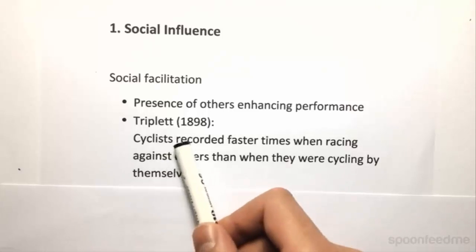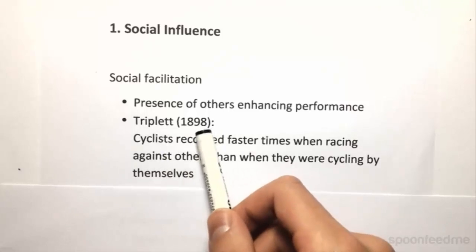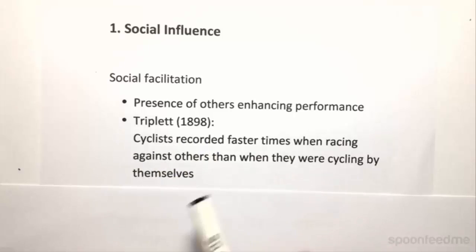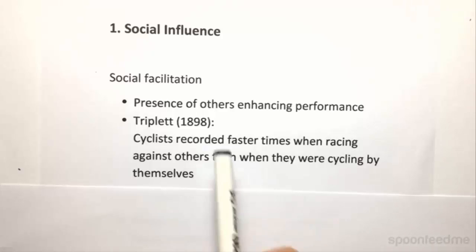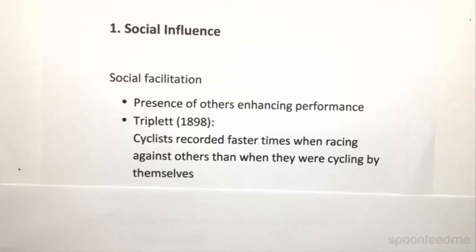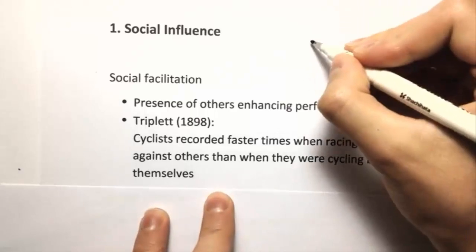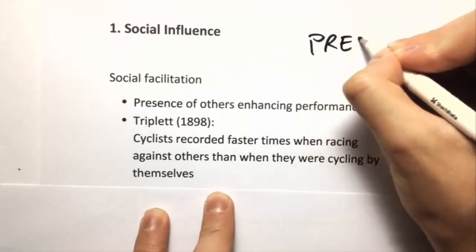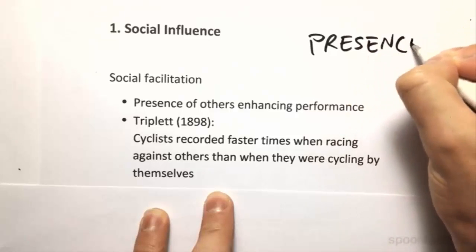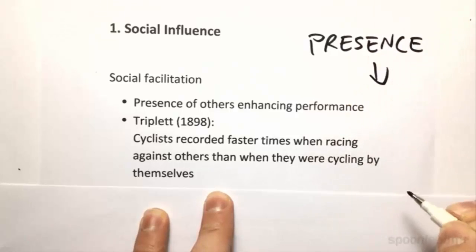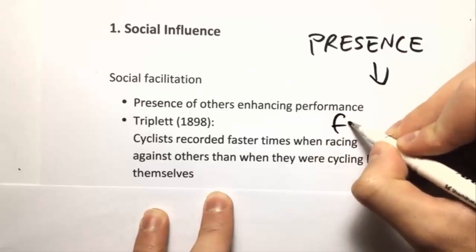For example, Triplett in 1898 showed that cyclists recorded faster times when they were against other cyclists than when they were by themselves. It's kind of sentimental because it's one of the first social psychology studies that were actually scientific. It showed that presence leads to facilitation.